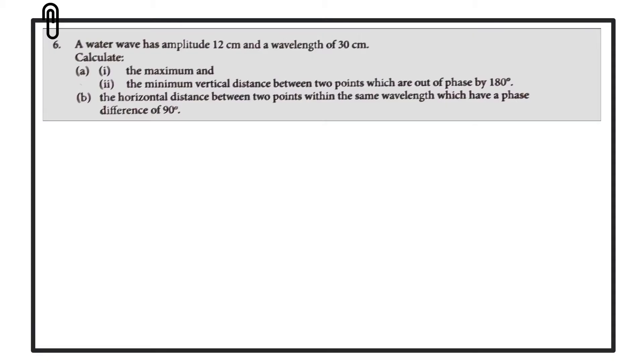Hi folks, in this video we're going to have a look at a question involving phase difference. A water wave has an amplitude of 12 centimeters and a wavelength of 30 centimeters.